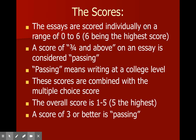The essays are scored individually on a range of zero to six, with six being the highest score. You get three scores of zero to six for the essays, and then they are combined with your multiple choice score. A high three is a passing score; four, five, and six are definitely passing. One, two, and low three are borderline scores you want to avoid. When all scores are combined, your overall score is given on a range of one to five, and a score of three or better means you've passed the AP exam.